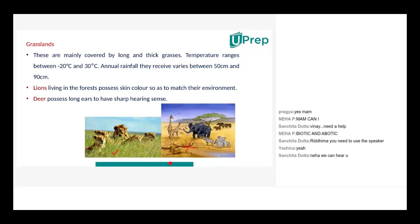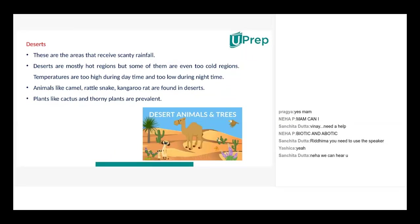Deserts — as a habitat, a very typical kind of animals we find are generally brownish or yellowish in color so they can camouflage themselves well in the desert. For example, the camel and certain rattlesnakes.